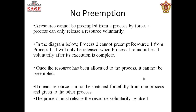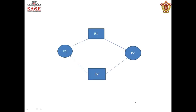We cannot snatch a resource forcefully from one process and give it to another. For example, process P1 is requesting resource R1 and holding resource R2. Whether P1 is using R2 or not, we cannot preempt or snatch R2 from it unless P1 voluntarily releases it. Process P2 requires both R1 and R2 to complete its execution, but R2 is allocated to P1. Only when P1 releases R2 can P2 complete its execution.